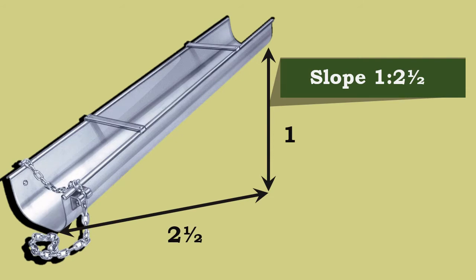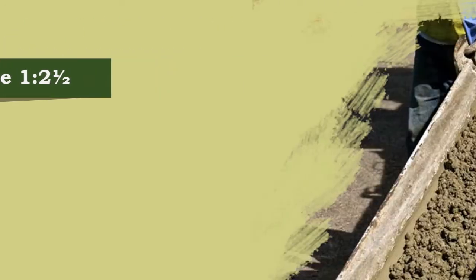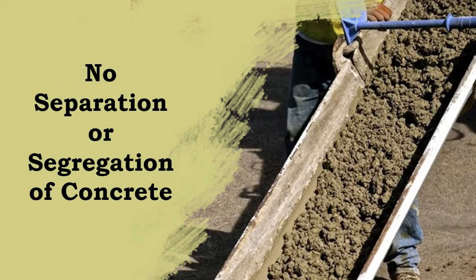The shoot must contain a uniform slope across the section, which is approximately one vertical to two and a half horizontal. The layout of the shoot should be made in such a way that the concrete will slide evenly in a compact mass without any separation or segregation.